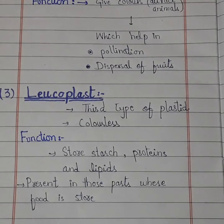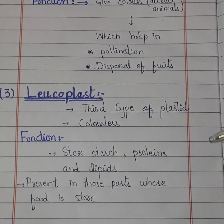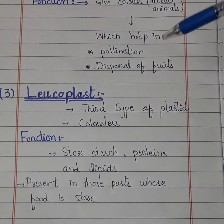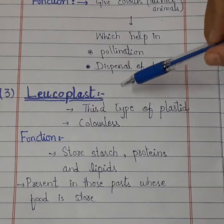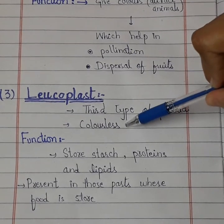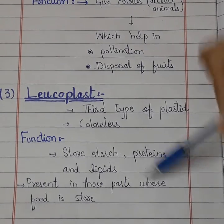Students, there are three types of plastids: chloroplasts, chromoplasts, and leucoplasts. Chloroplasts are green and their function is to help in photosynthesis. Chromoplasts are bright colors and help in pollination and dispersal of fruits. The last one, leucoplasts, are colorless and are involved in storage of food. Thank you students, I hope you understood the lecture well.